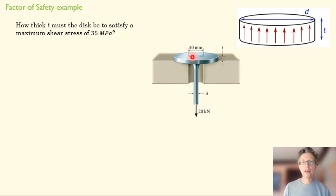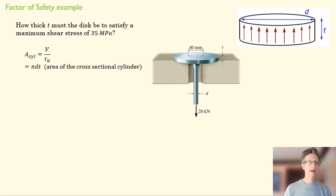And if we model this cylinder in here, we sort of enlarge it up here, we can see that the area of that, the side of that cylinder is going to be the circumference of the circle multiplied by T. So that area of the cylinder is going to be equal to our shear force over our shear stress. And that area is also going to be equal to pi D, our circumference, times T.